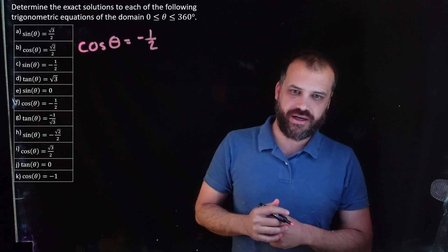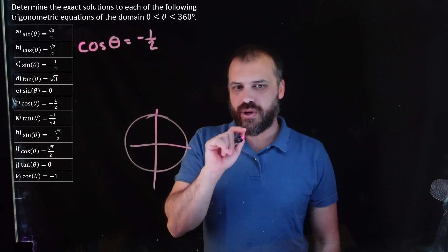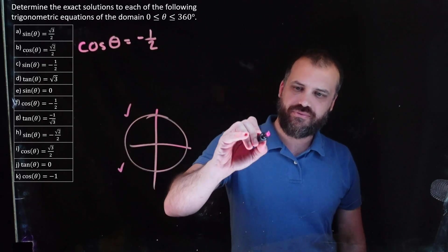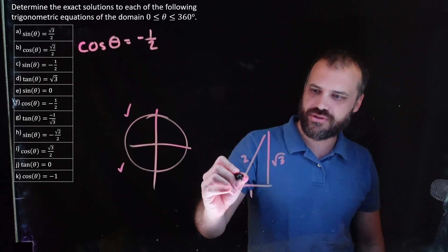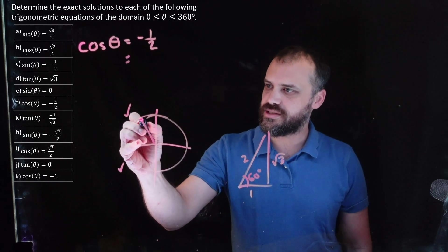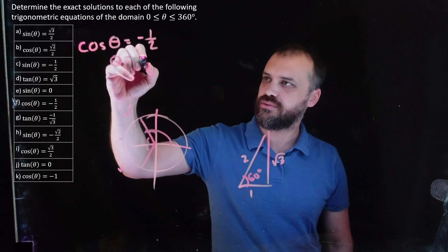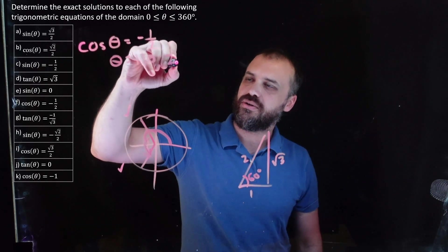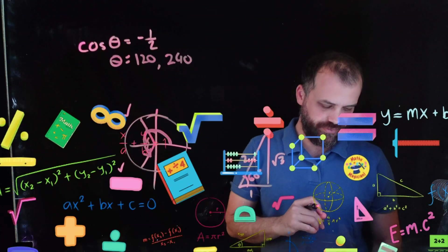Cos θ = -1/2. Draw a circle. Cosine is the x-coordinate of our dot, and where is the x-coordinate negative? Quadrant two and quadrant three. Negative 1/2 comes from the 1-2-root-3 triangle — cos is adjacent over hypotenuse, so this must be the 60-degree angle. Drawing 60 degrees from the x-axis in each quadrant. Theta equals 180 minus 60 which is 120 degrees, or 180 plus 60 which is 240 degrees. Two answers.